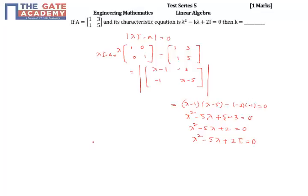If you see the characteristic equation given as λ² - kλ + 2I equal to 0, and you compare these two, in place of k I am having 6. So the value of k in the given problem is 6.